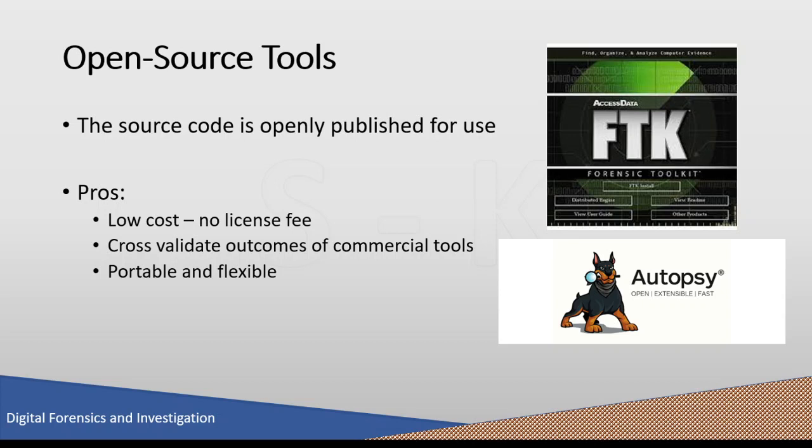The term open source refers to something that people can access, modify, and share because its design is publicly accessible. The open source term originated in the context of software development to label a specific approach of creating computer programs. Open source software is considered software with source code that anyone can access, inspect, modify, and even enhance. Programmers with access to the source code can improve a program by adding features or fixing parts that don't work properly.